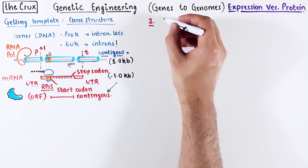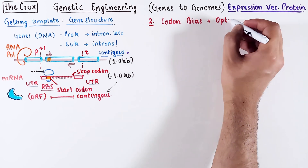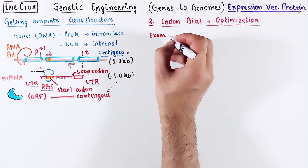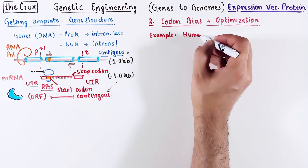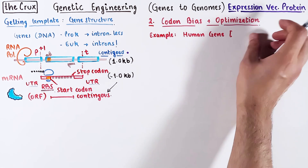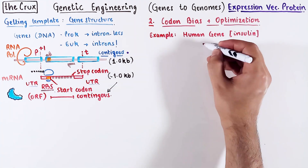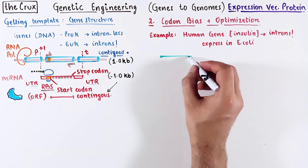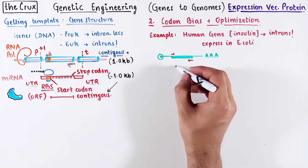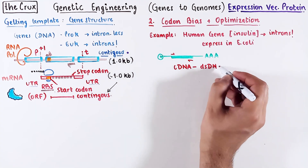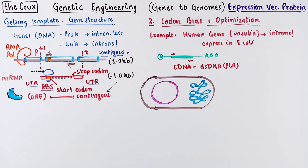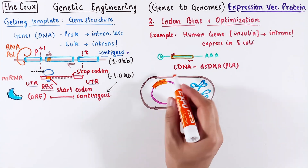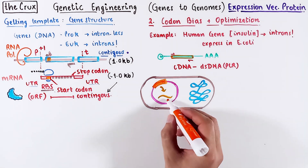The second big problem with protein expression systems is optimizing for codon bias. Suppose you want to express the human insulin protein in a bacteria. The insulin gene has introns, so given what you've learned, you would take the mRNA, make cDNA, and use that as a template for your expression vector. When this vector is in the bacteria, an mRNA will be made. Do you expect this mRNA to work, and will protein synthesis be efficient?